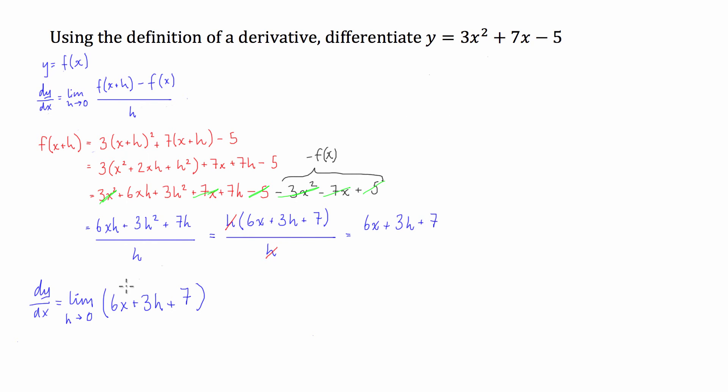Now what happens here is as h tends to 0, well, this stays the same. 6x has got nothing to do with h and the constant 7 has nothing to do with h. But as h approaches 0, 3 times h will approach 0 as well. So that's going to equal 0. So once we've taken the limit, this 3h is going to disappear.